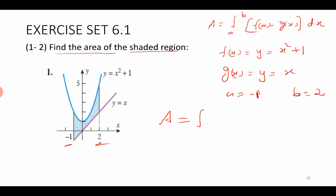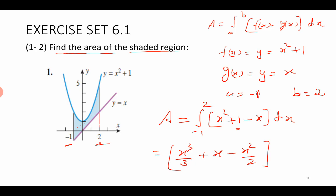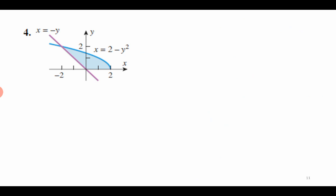The area is the integral from −1 to 2 of [(x² + 1) − x] dx. Integrating gives x³/3 + x − x²/2, evaluated from −1 to 2. Substituting the upper and lower limits and using your calculator, the answer is 9/2, or 4.5.